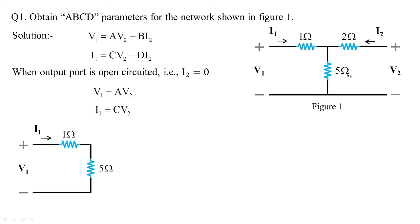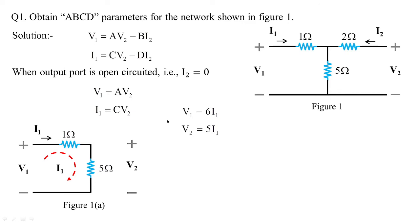When figure 1 is open-circuited, as shown in figure 1A, the current I1 flows through the series combination of 1 ohm and 5 ohms. Applying KVL: V1 = 6I1 (since 1+5=6), and V2 is measured across the 5-ohm resistor so V2 = 5I1. Therefore A = V1/V2 = 6/5, evaluated with the output port open-circuited (I2 = 0).